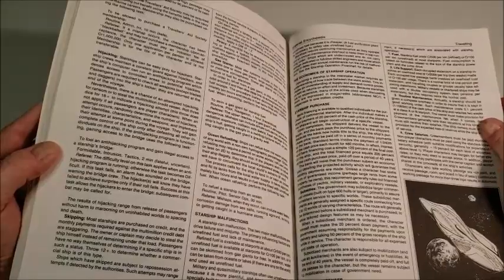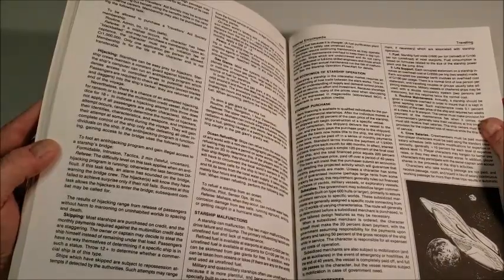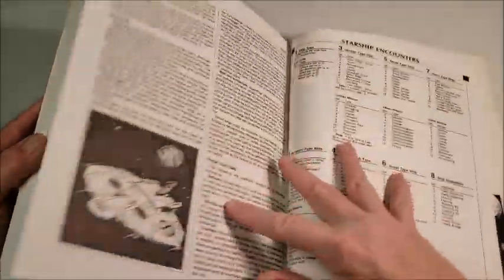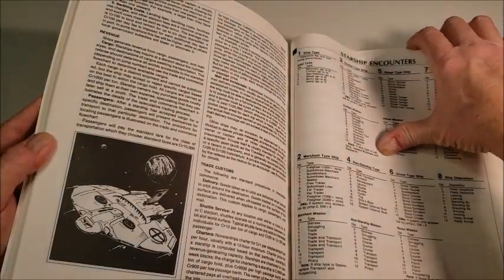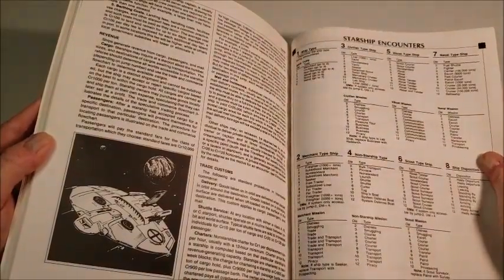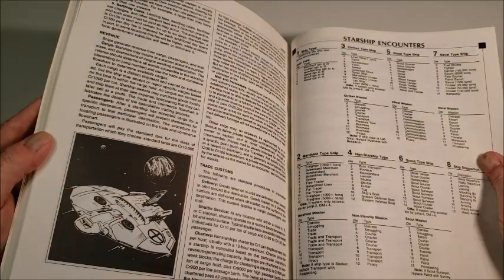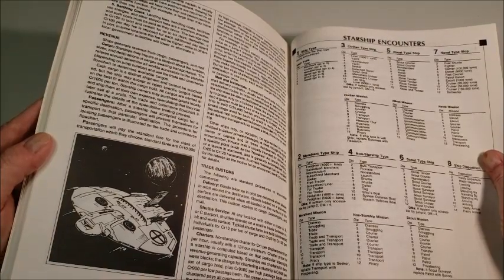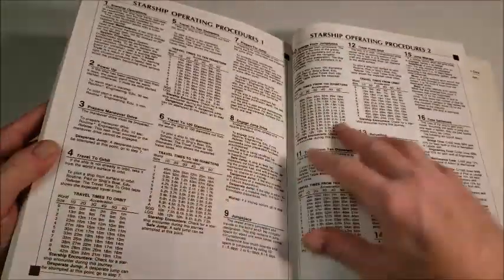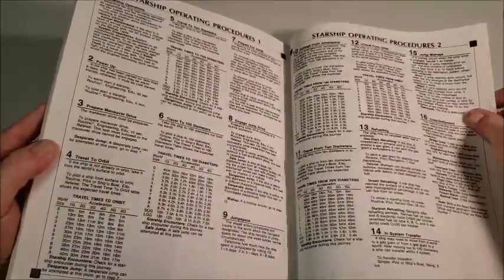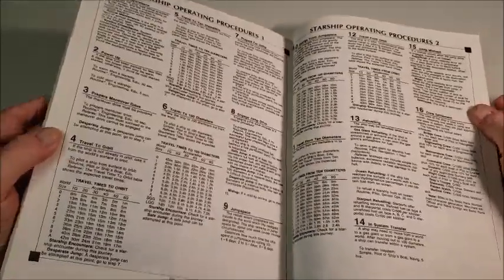Starship operating. The expense of economics running a starship. Here's a nice Starship encounters chart. This is expanded on in the Starship Operators Manual. I've done a video on that some time ago from DGP. I like that. I like that these rules mesh with those rules. Starship operating procedures one and two. So how do you run a starship? Well, this will teach you how.